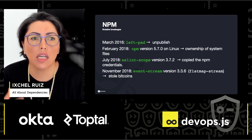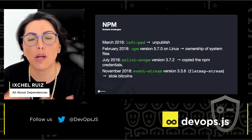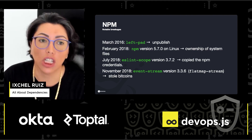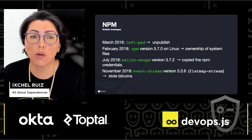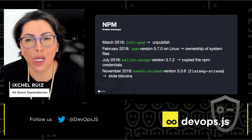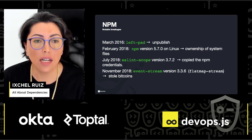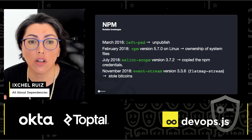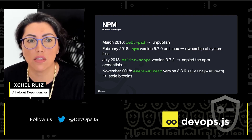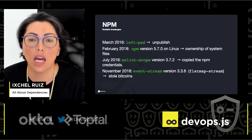For example, in NPM, in March 2016, there was a dispute over the naming itself, so a package was unpublished. Three hours later, the NPM registry published it again and even changed its policies. In February 2018, there was a problem with NPM version 5.7.0 — on Linux, when you ran NPM, it changed the ownership of system files, essentially breaking the machine. In July 2018, the NPM credentials of a maintainer of the Slin scope were compromised, leading to a malicious release of Slin scope version 3.7.2, which copied the NPM credentials of machines running it and uploaded them.